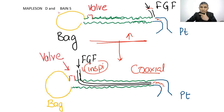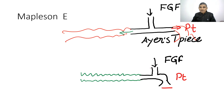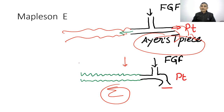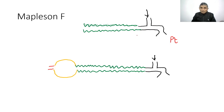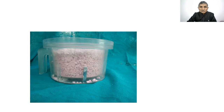The Mapleson E circuit is also known as the Ayre's T-piece. If you attach corrugated tubing to the T-piece, it becomes Mapleson E. If a bag with a hole (open-tail bag) is attached to the T-piece, it becomes Mapleson F — the Jackson-Rees modification — used for pediatric patients less than 20 kg or less than 6 years of age.